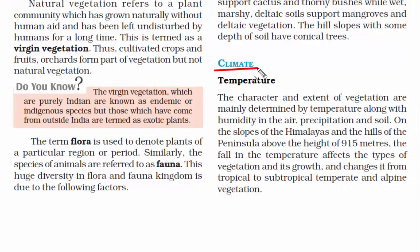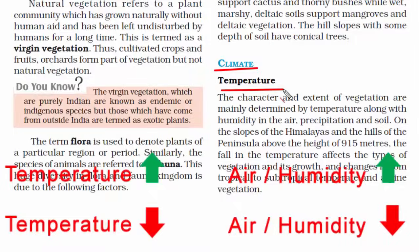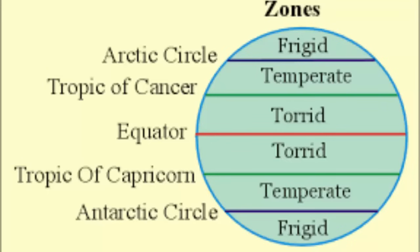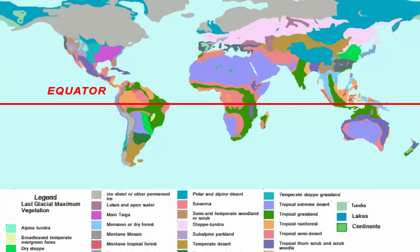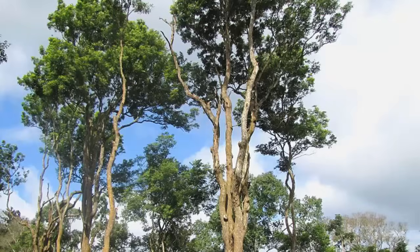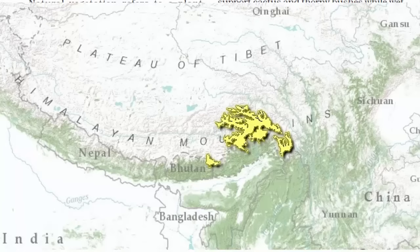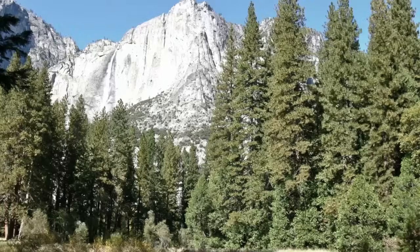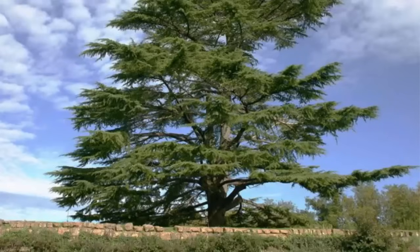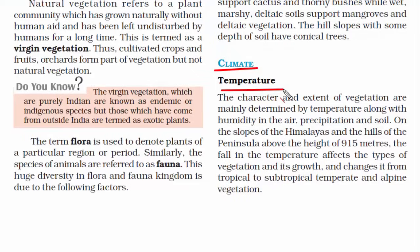The second category is climate. Temperature plays an important role in the growth of plants and trees because it changes the humidity in the environment. As we go away from the equator, temperature decreases and the type of vegetation cover also changes. Near the equator, you will find evergreen forest where trees such as rosewood and margani are found. But in the Himalayas, you will find coniferous forest where trees such as pine, cedar, and deodar are found.